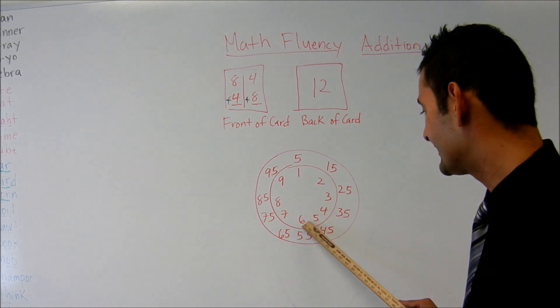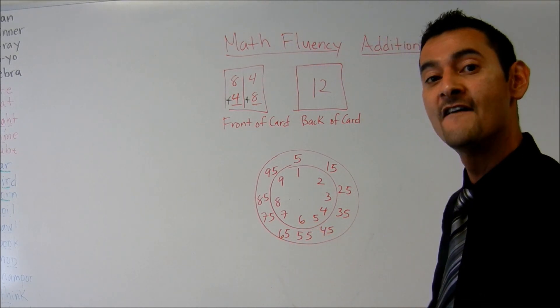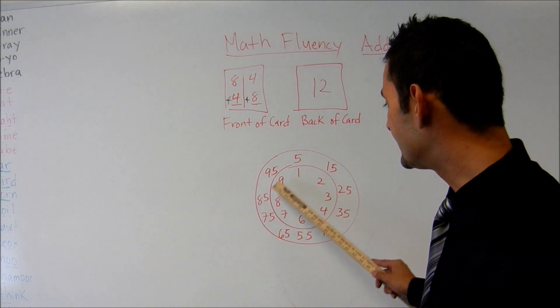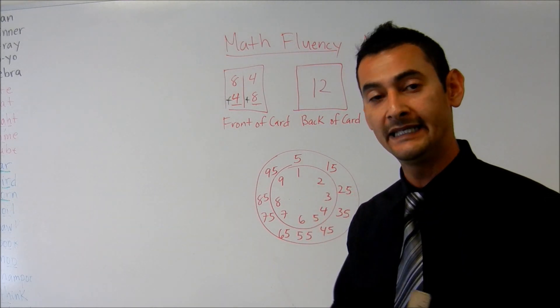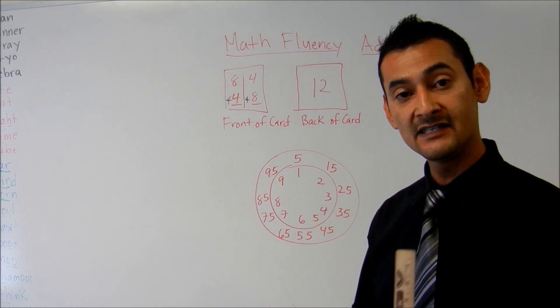Six plus thirty-five, forty-one. Six plus forty-five, fifty-one. Again, we want to build their fluency. And the more they're able to see these patterns, the more quickly they're going to be able to add. And this is our goal.